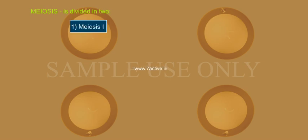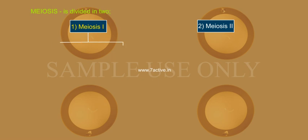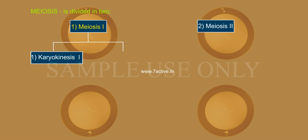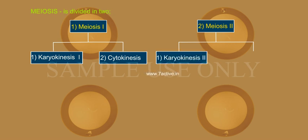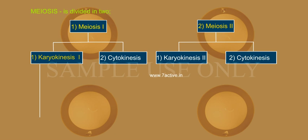Meiosis is divided into two parts: meiosis I and meiosis II. Meiosis I is further divided into karyokinesis I and cytokinesis. Meiosis II is further divided into karyokinesis II and cytokinesis.